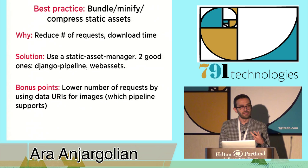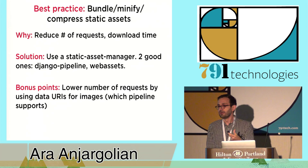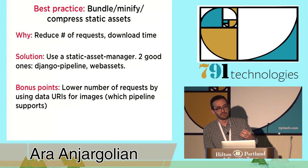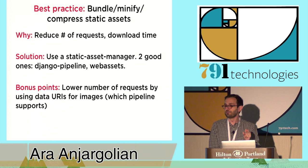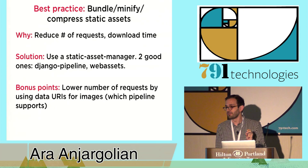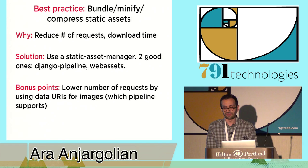Bonus points: Django Pipeline also supports data URIs. If you're referencing images in your CSS files and those images are under 32k, it'll take those images, turn them into base64, and embed them right in the CSS file. Years ago, the best practice for reducing requests for sites with 50 little icons was having your designer create sprites and using CSS offsets. With data URIs, you don't really need to do that. You can have 50 images, reference them in your CSS file, and the static asset manager will replace each with a base64 equivalent — no more managing sprites.